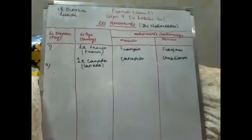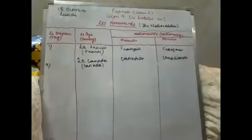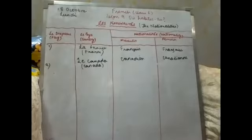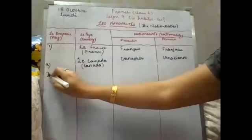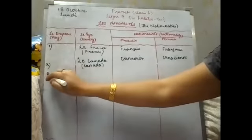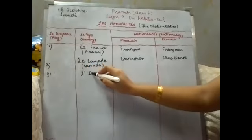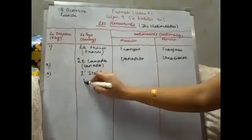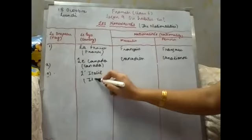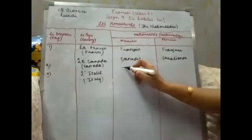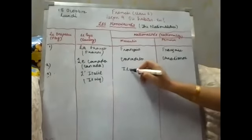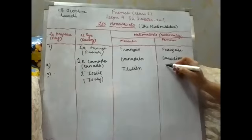Then comes the third country, that is Italy. L'Italie is Italy, and the nationalities are Italien and Italienne.